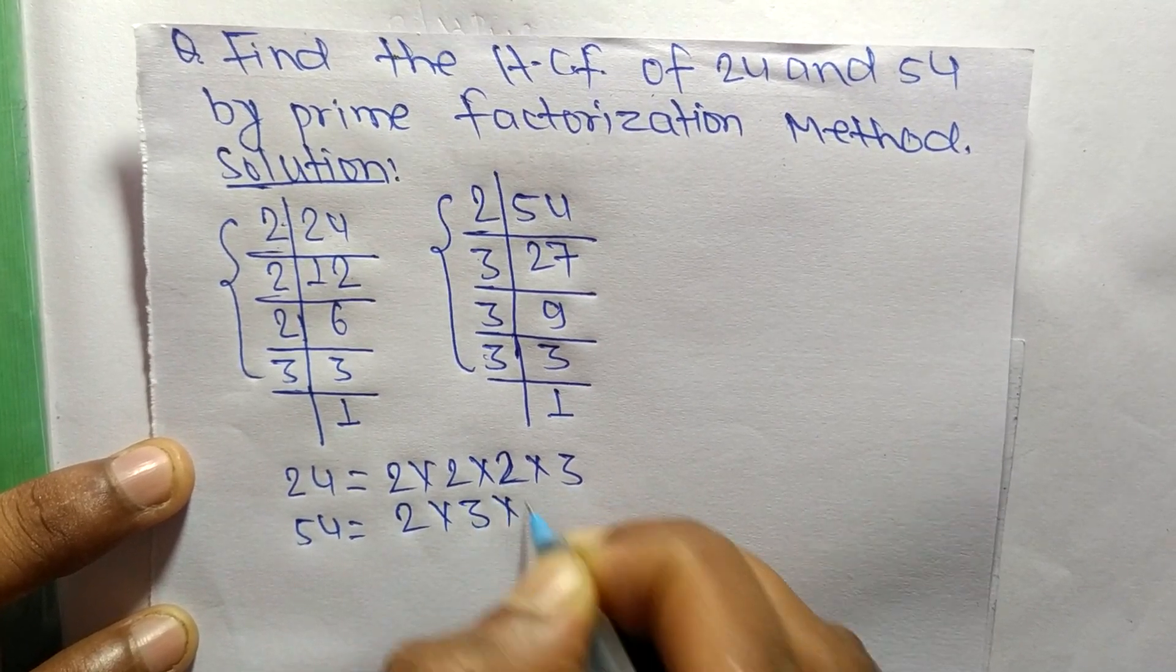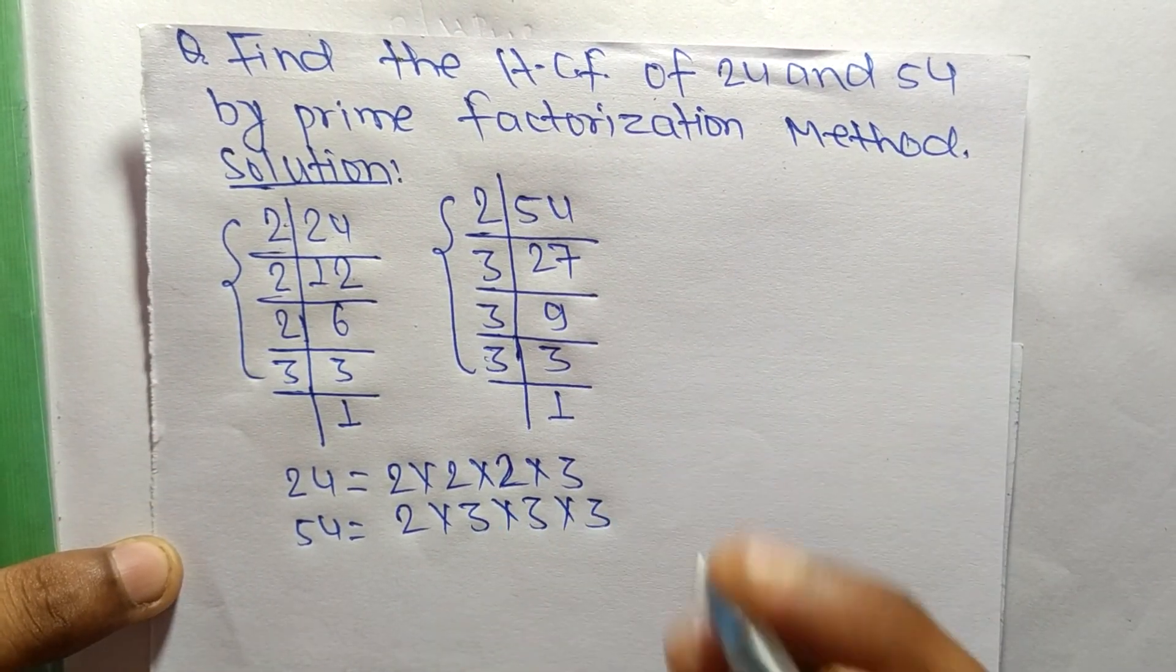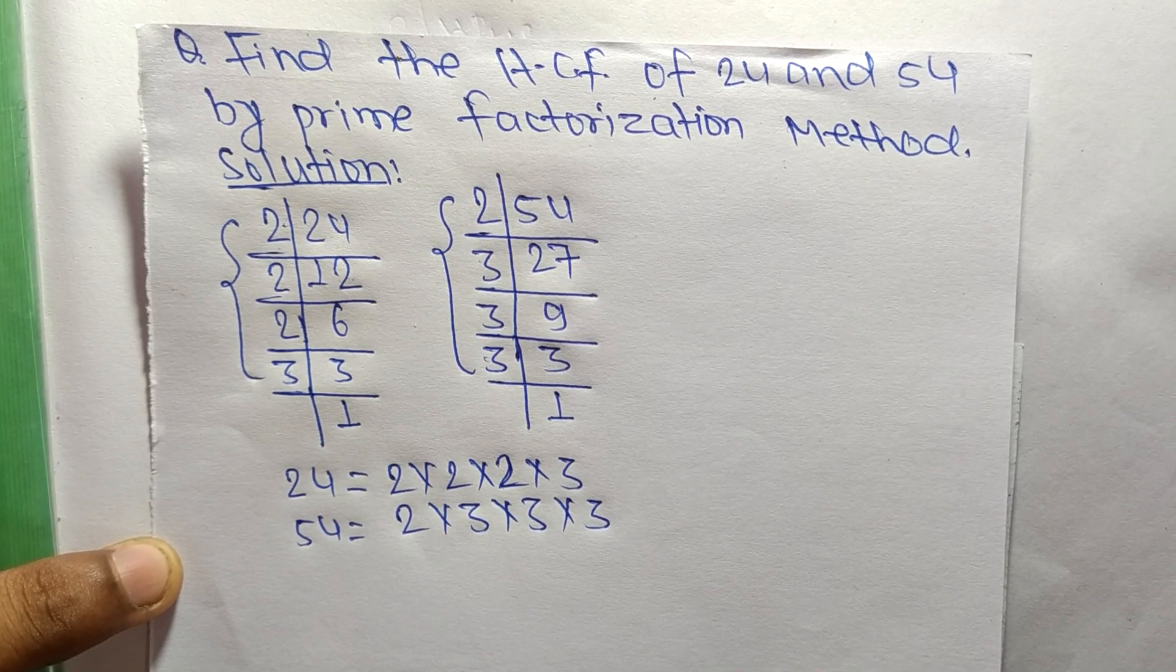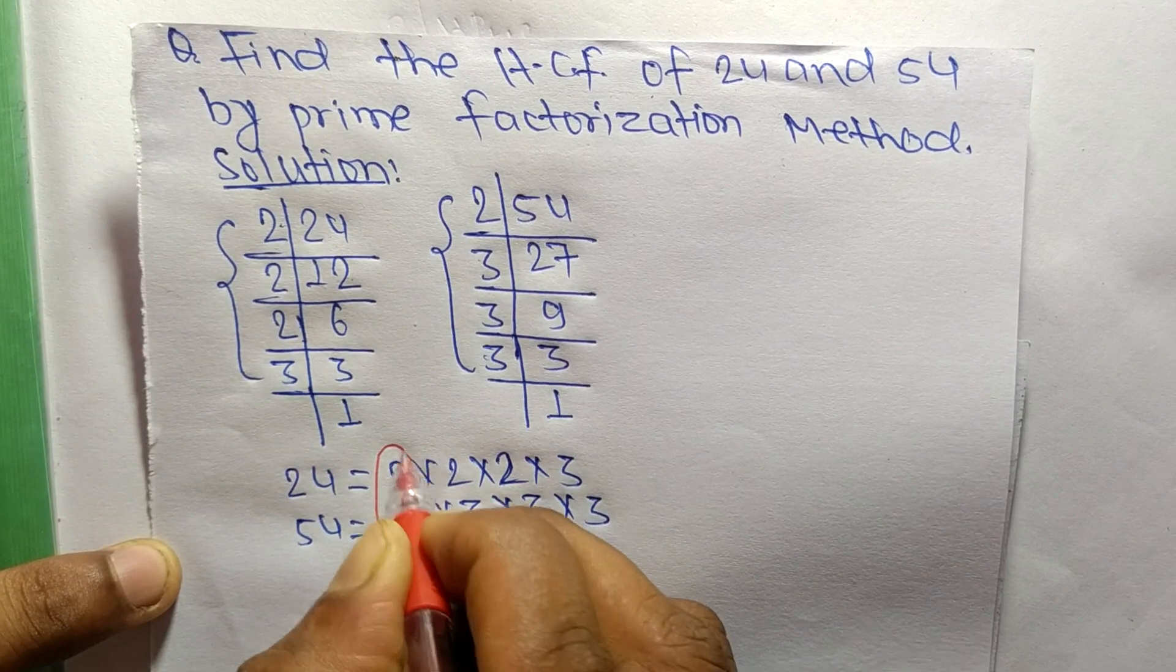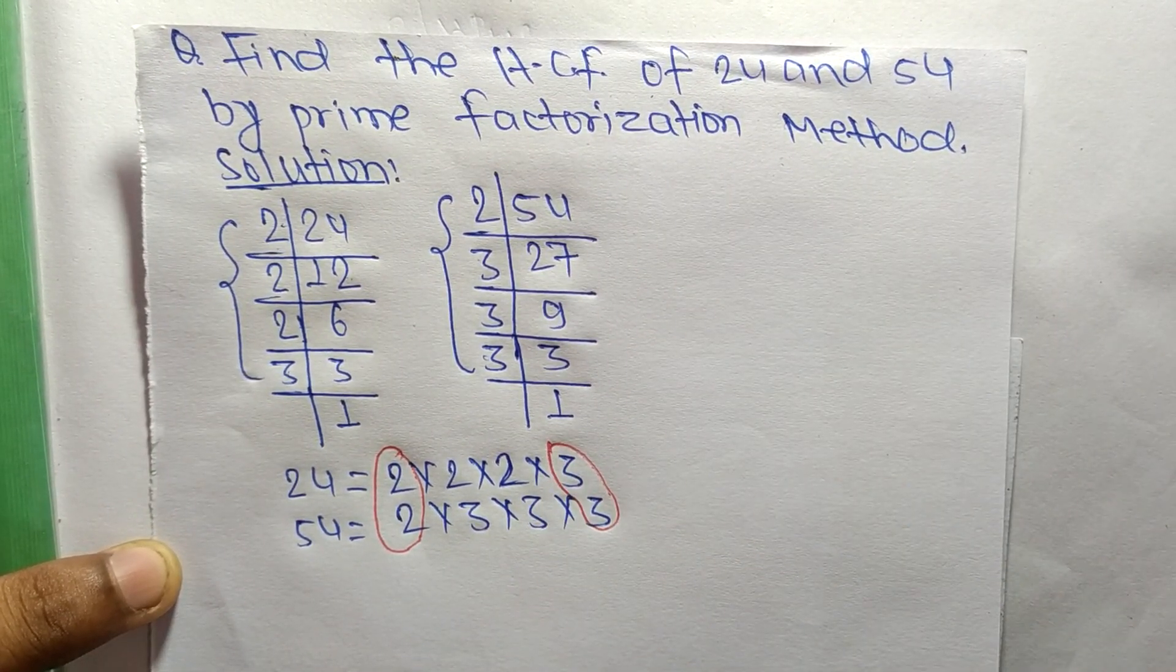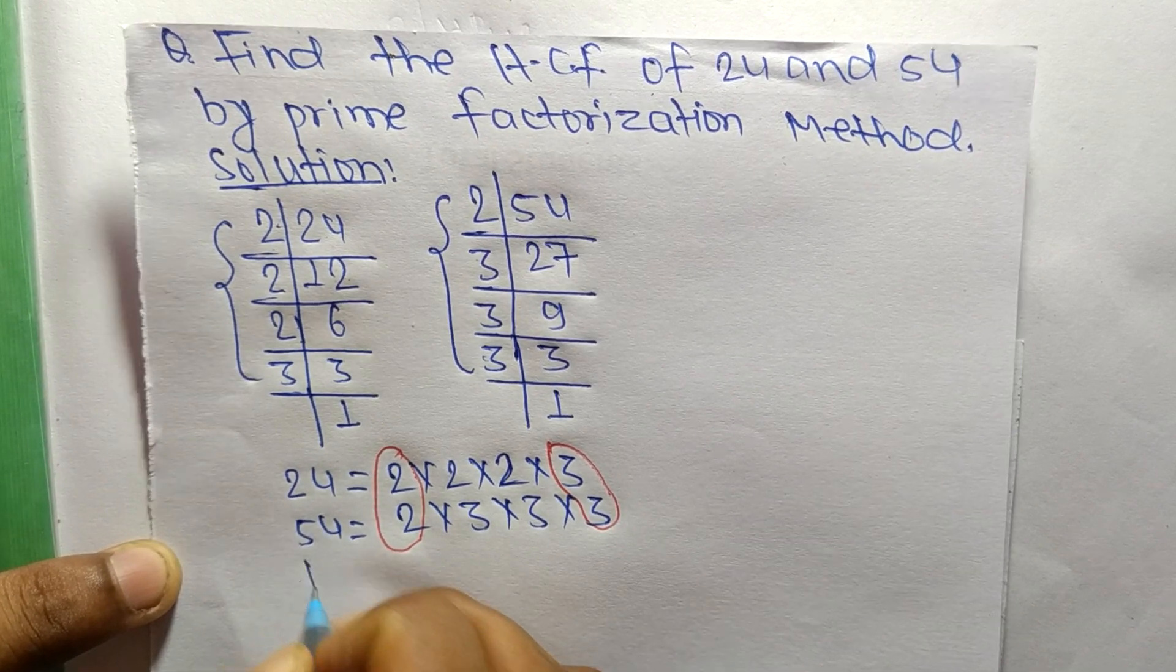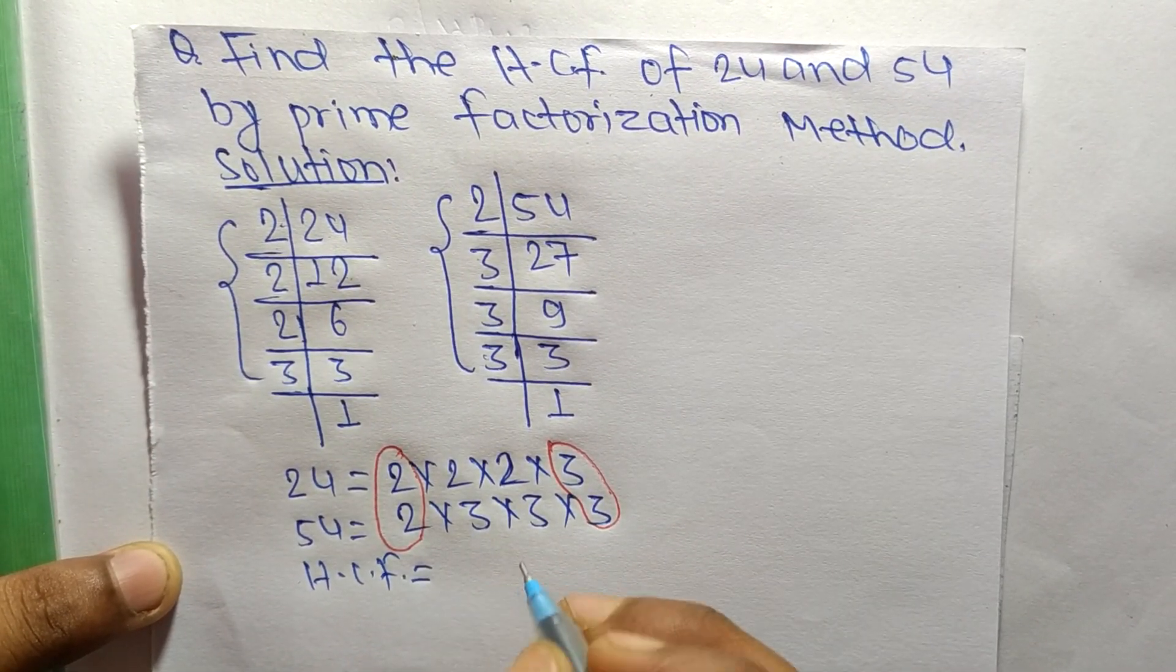So now from these prime factors we find out the common factors. The common factors here are 2 and 3. So now the HCF is equal to the product of common factors which are 2 and 3.